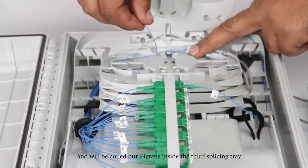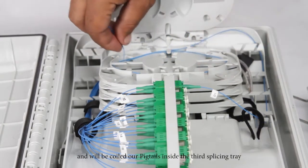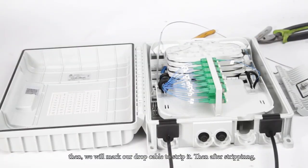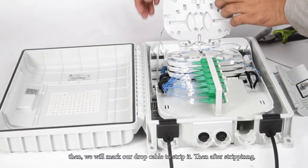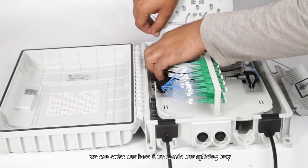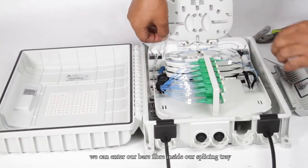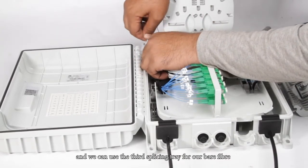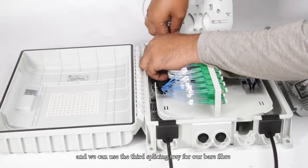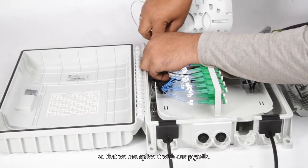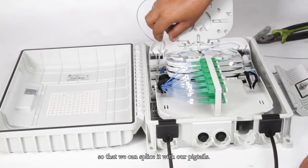We will coil our pigtails inside the third splicing tray. After stripping, we can enter our bare fiber inside our splicing tray and we can use the third splicing tray for our bare fibers so that we can splice it.